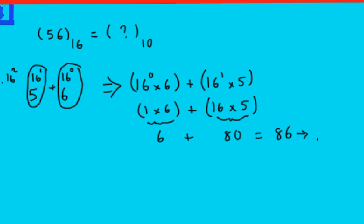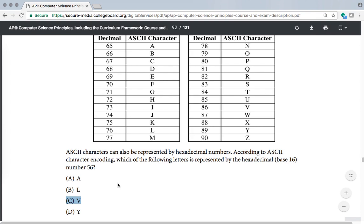because 86 refers to V. The answer is C. That's all. It's a simple question. Thank you for watching.